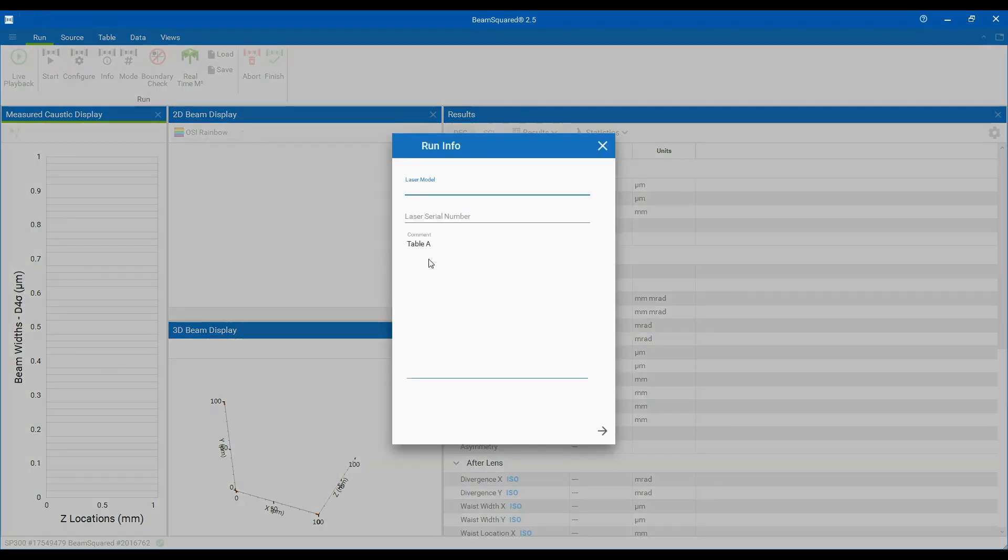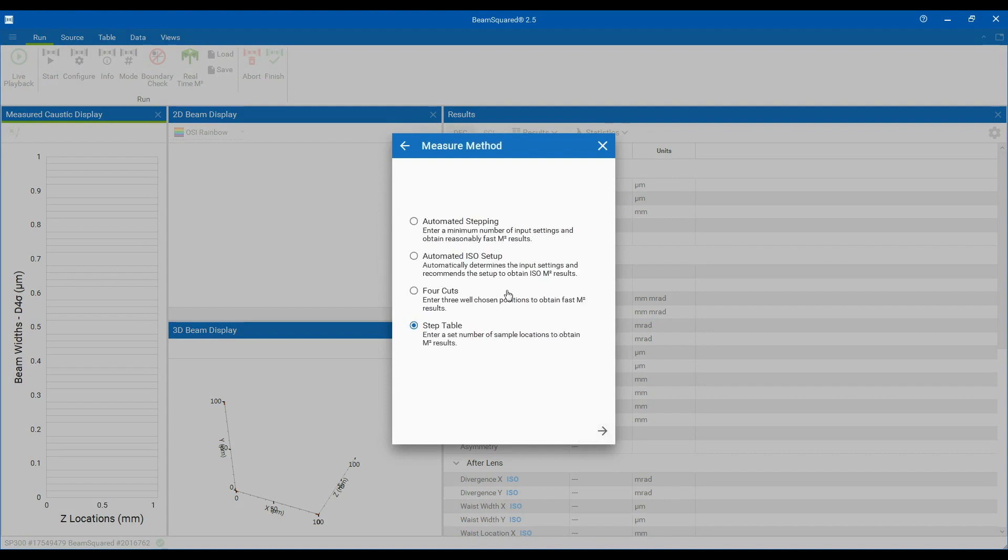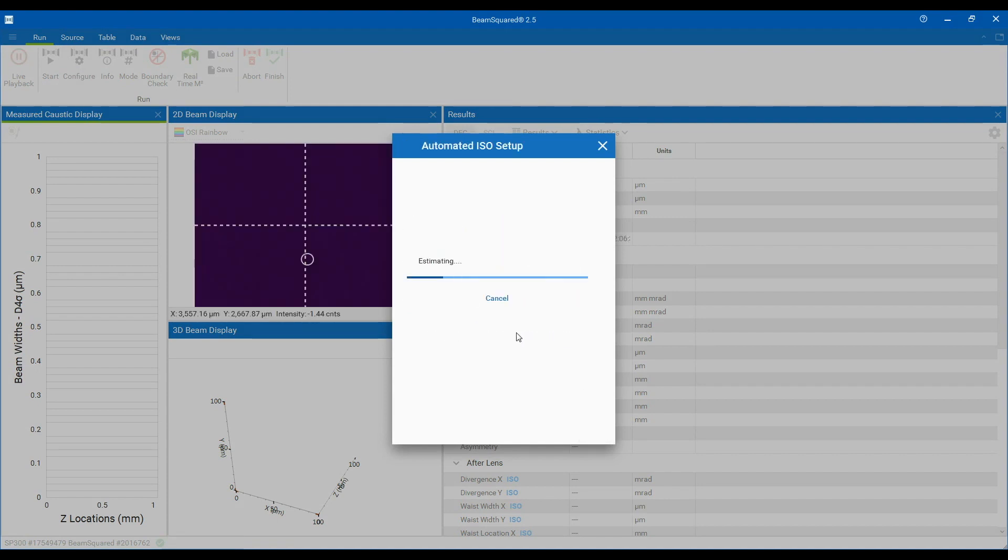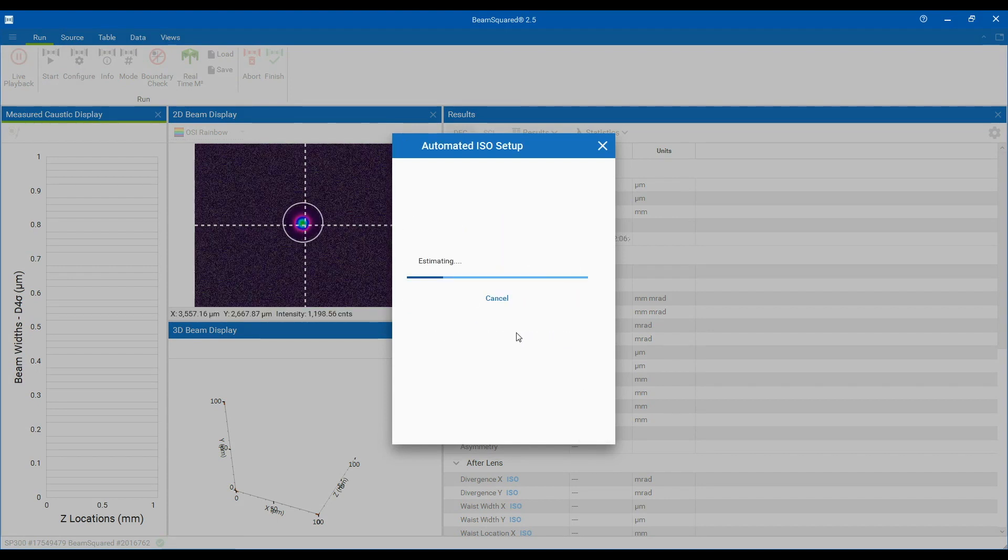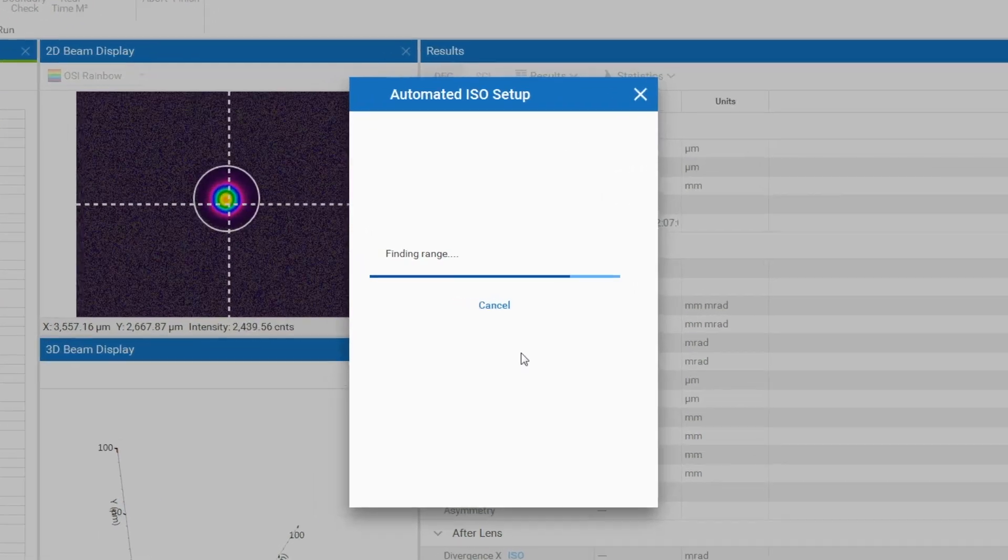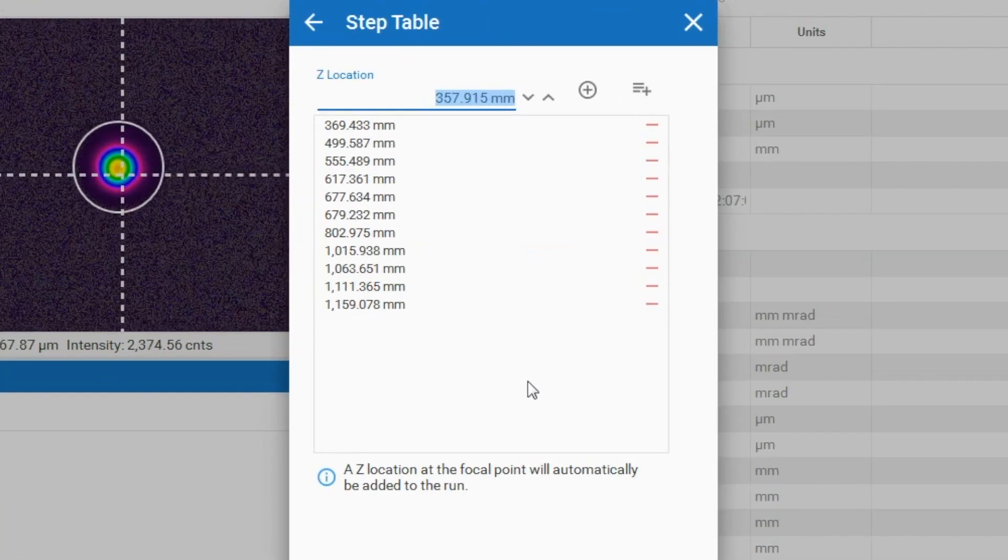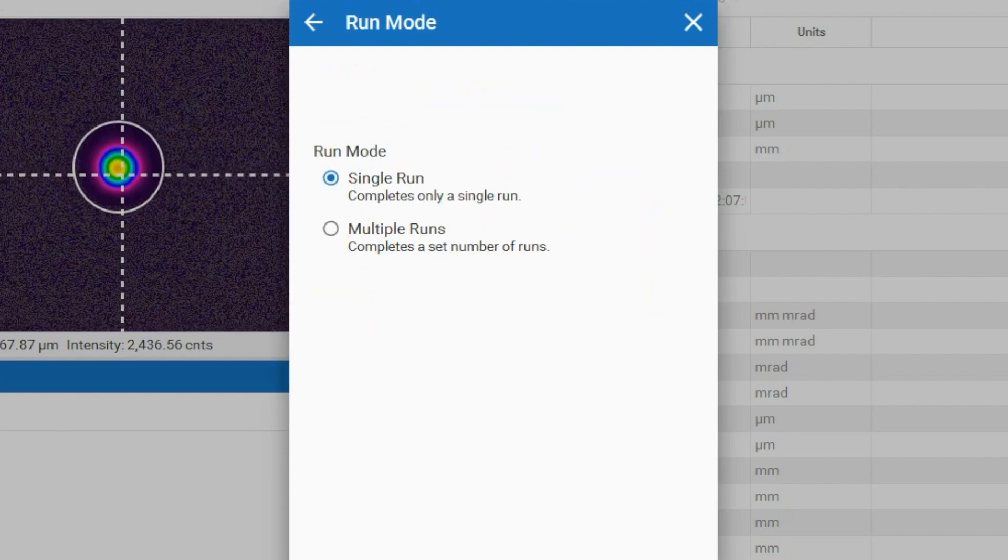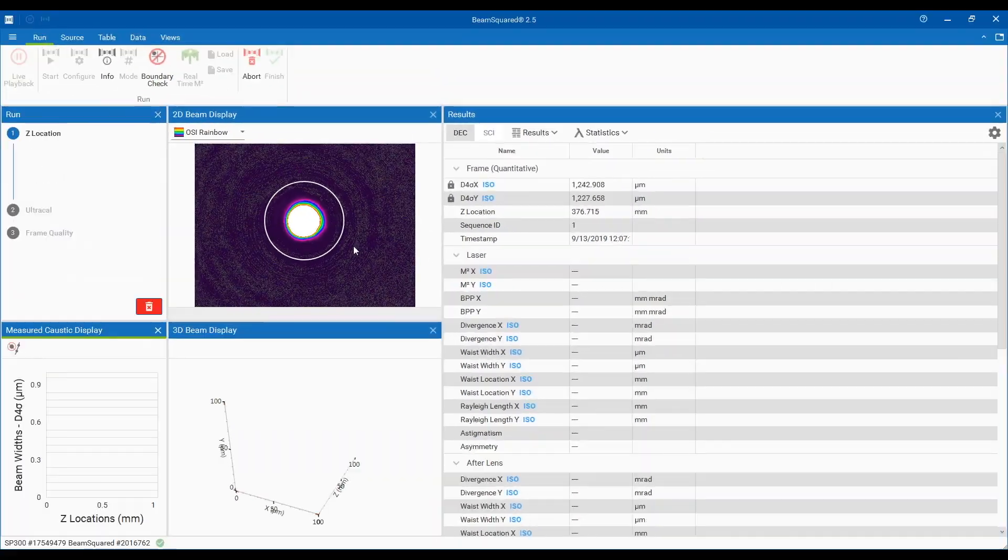The new automated ISO setup feature is selected in the measure method window that is part of the Beam Squared configure feature. If successful, the automated ISO setup will populate the step table in the Beam Squared software so an ISO compliant beam propagation measurement can be made.